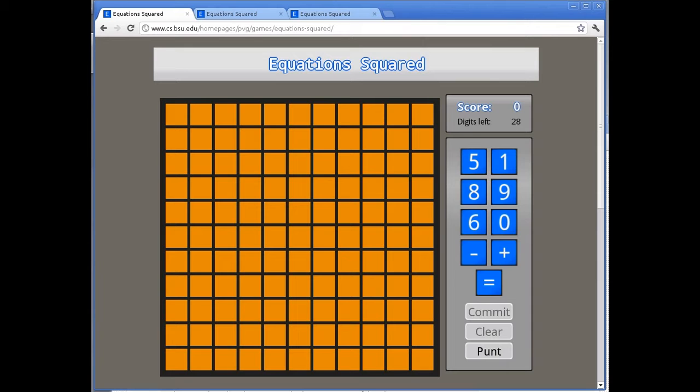To play the game, you make balanced equations out of the blue tiles on the right, placing them onto the orange spaces on the left. For example, 9 minus 8 equals 1.